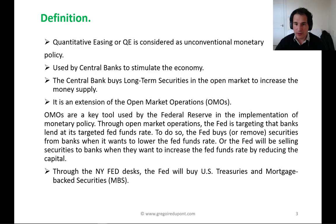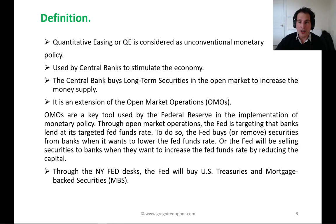Through open market operations, the Fed is targeting that banks lend at its targeted Fed funds rate. To do so, the Fed buys or removes securities from banks when it wants to lower the Fed funds rate, or sells securities to banks when it wants to increase the Fed funds rate by reducing capital. Through the New York Fed desk, the Fed will buy US Treasuries and mortgage-backed securities, or MBS.